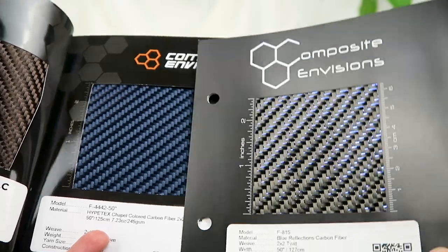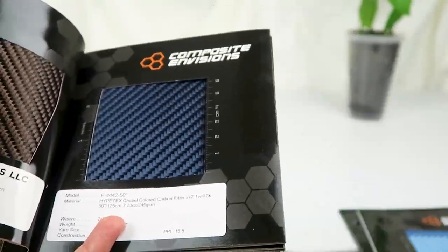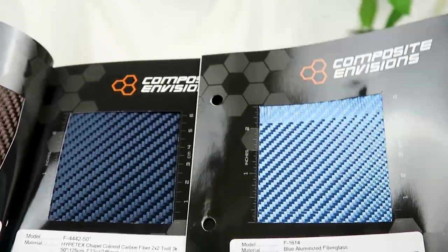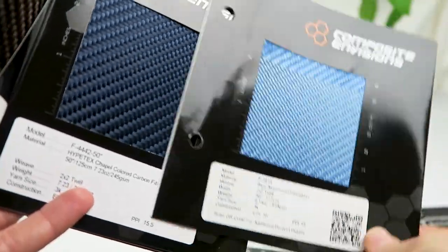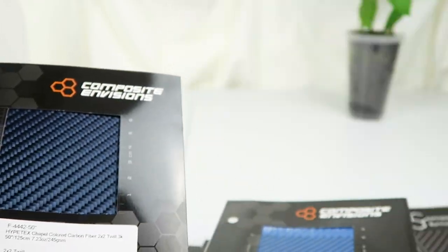For the blue color, there is also Reflections that has a blue metal strip running through it and also a blue aluminized fiberglass. Again, this is much lighter and it's fiberglass not carbon fiber, but it's interesting to see how similar some of the colors are.